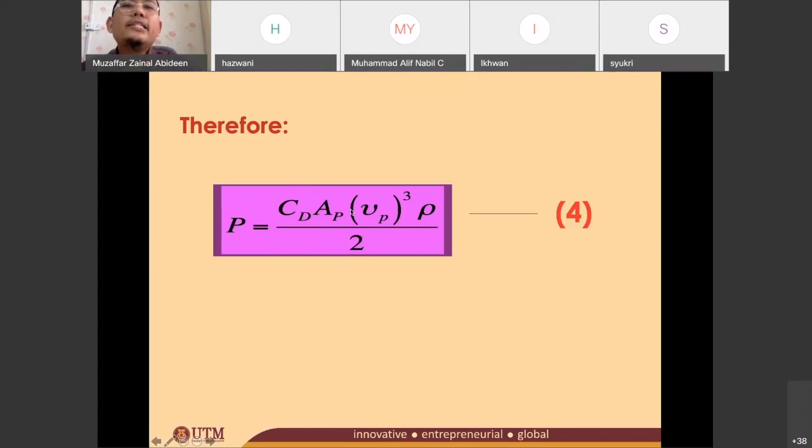So AP VP is the area of plates. If you can remember the diagram for the mechanical flocculator just now, they have like the first pedal have 8, the second pedal has 6 if I'm not mistaken, and the third pedal has 4 plates. So those area, 4 plus 6 plus 8, the total of that area is AP.